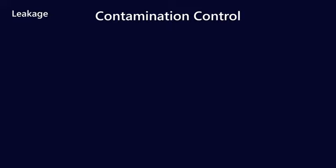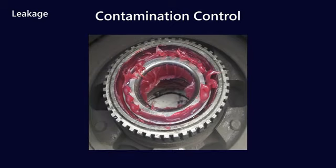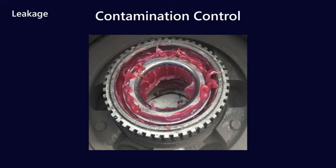Then we've also got contamination control, which works very differently for oil and grease. Here's a picture of a wheel hub packed with grease. One advantage of grease is that it can keep contaminants out — whether it's wash-down water or dirt or dust particles. However, once contamination gets into the grease, it can hold and retain it in the application, making it really difficult to remove without an actual grease purge. With oil, contamination control works differently — the oil carries contaminants in suspension to the filters where they're removed.